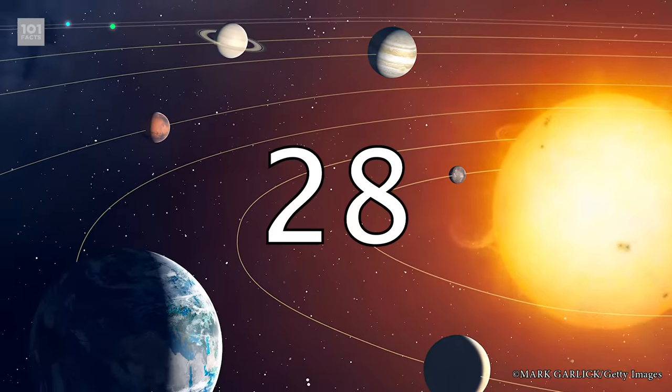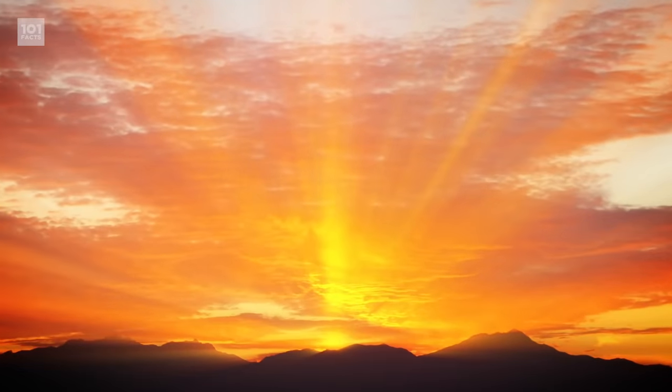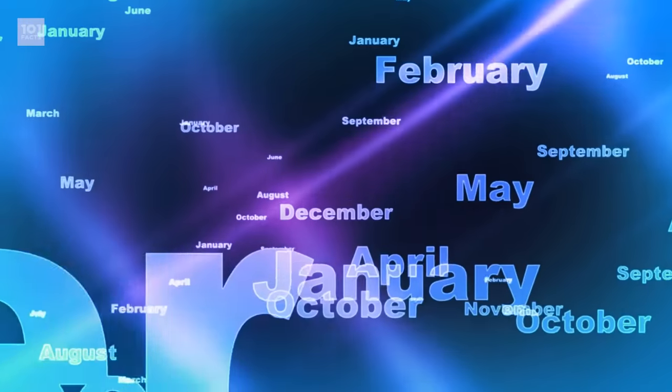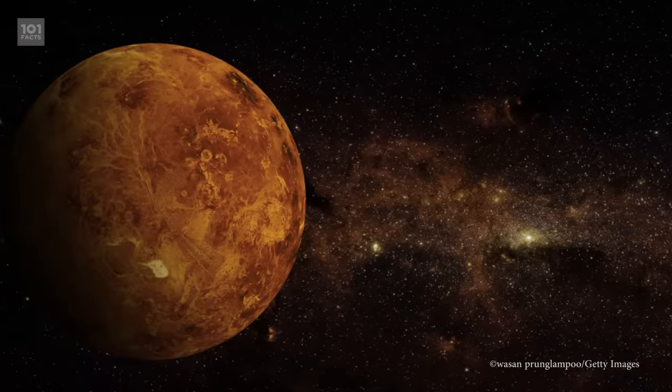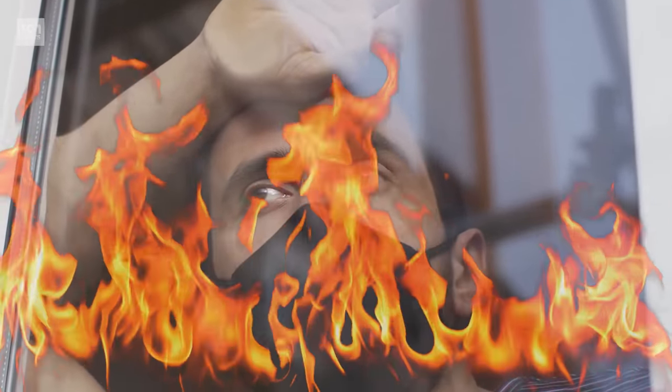A day on Venus is also longer than a year on Venus. Let me explain. It takes 225 Earth days for Venus to orbit the sun, but 243 Earth days to do a full axis spin. So on Venus, a day is actually longer than an entire year. In other words, it's how long every day's felt since March 2020. Pandemic joke.